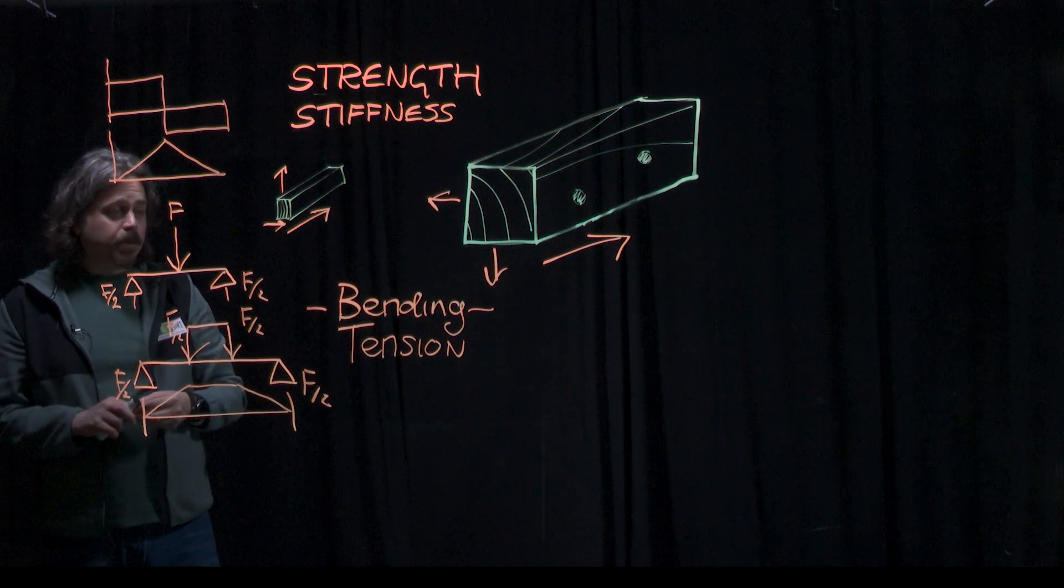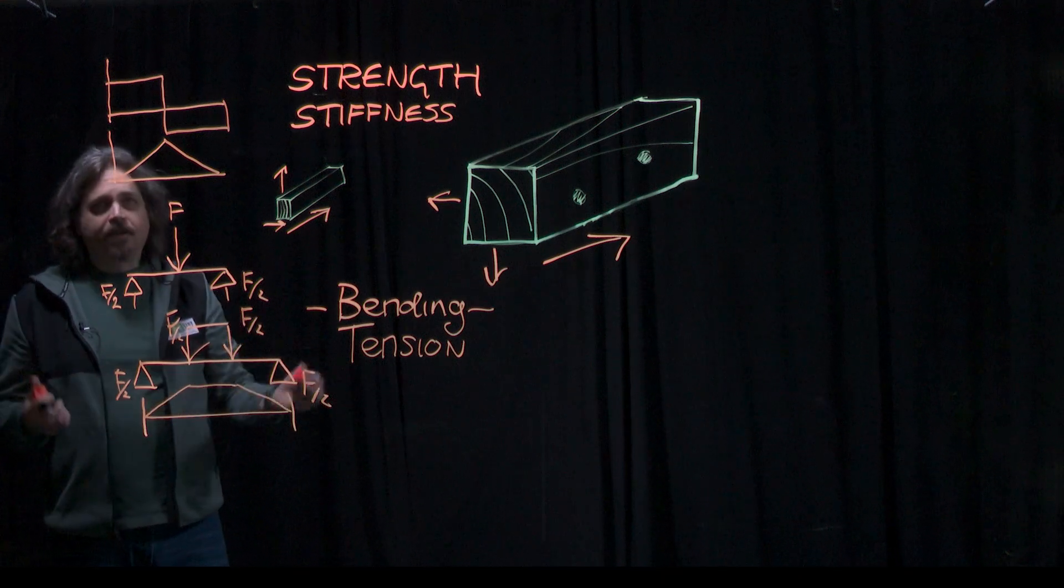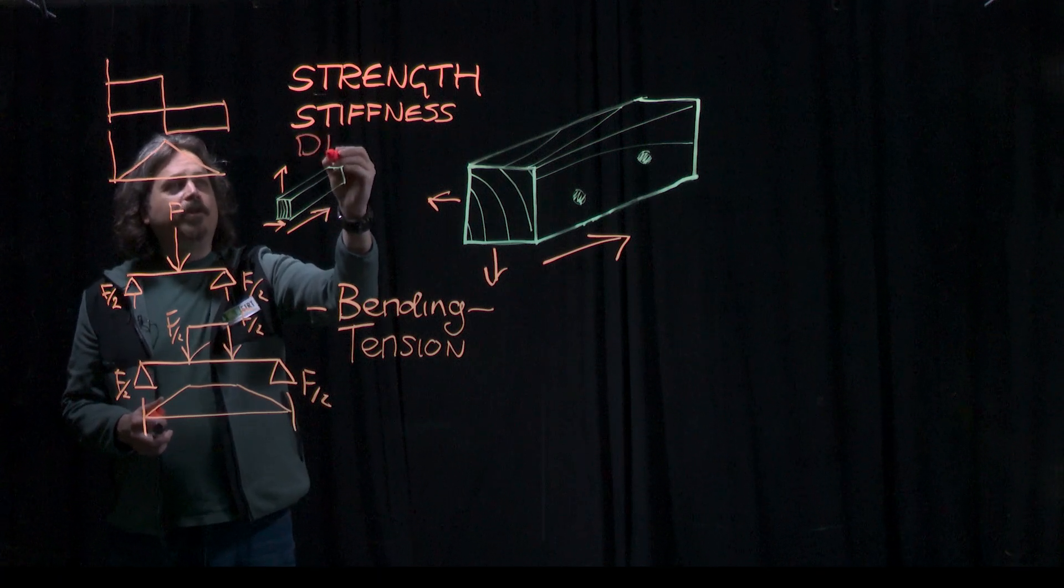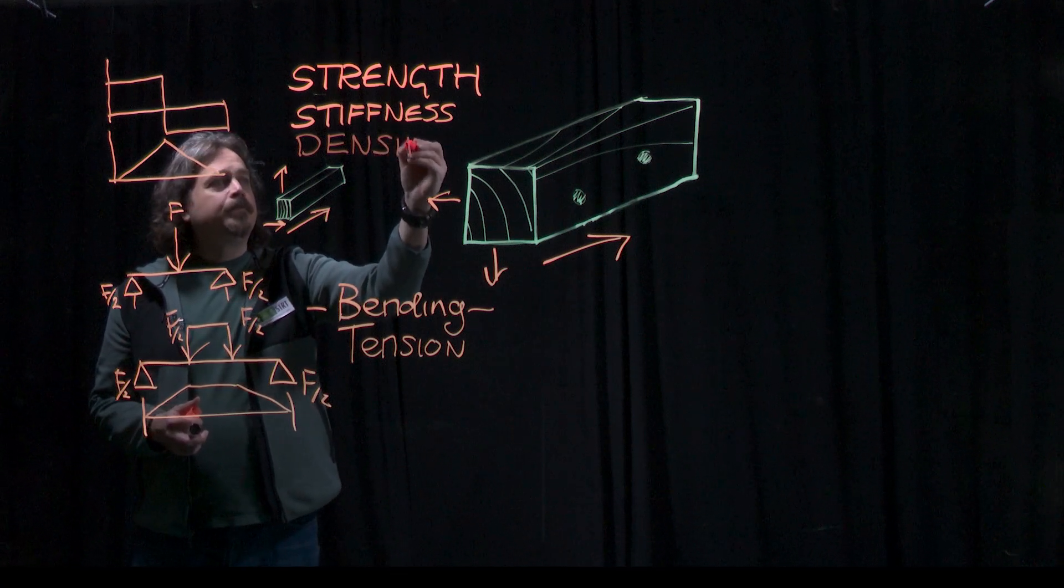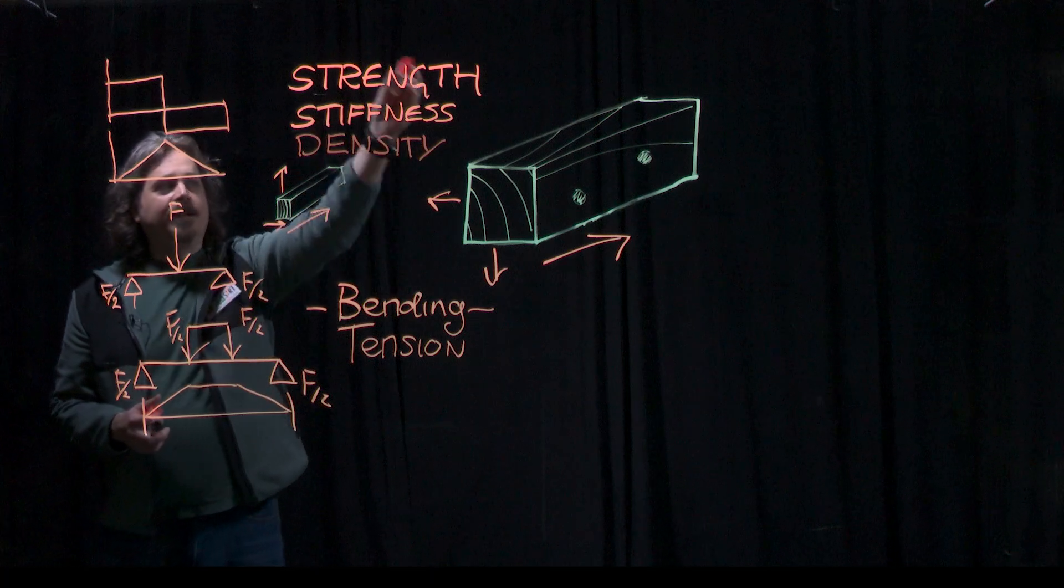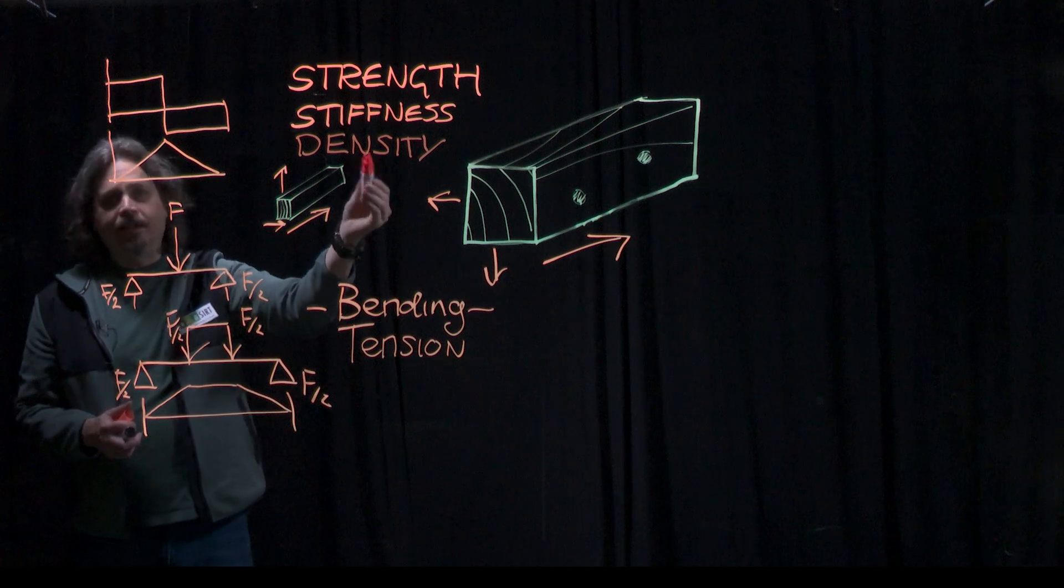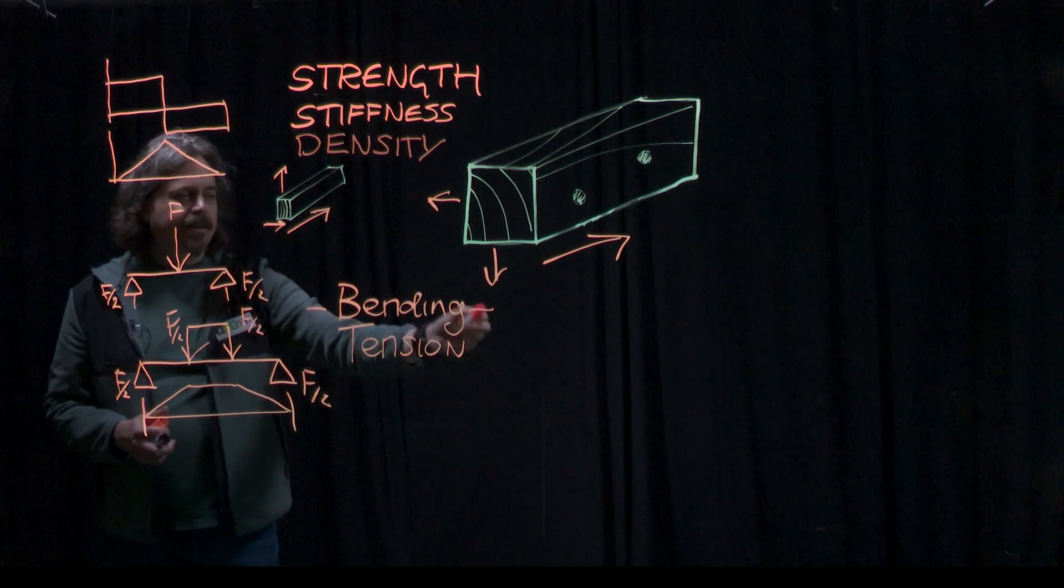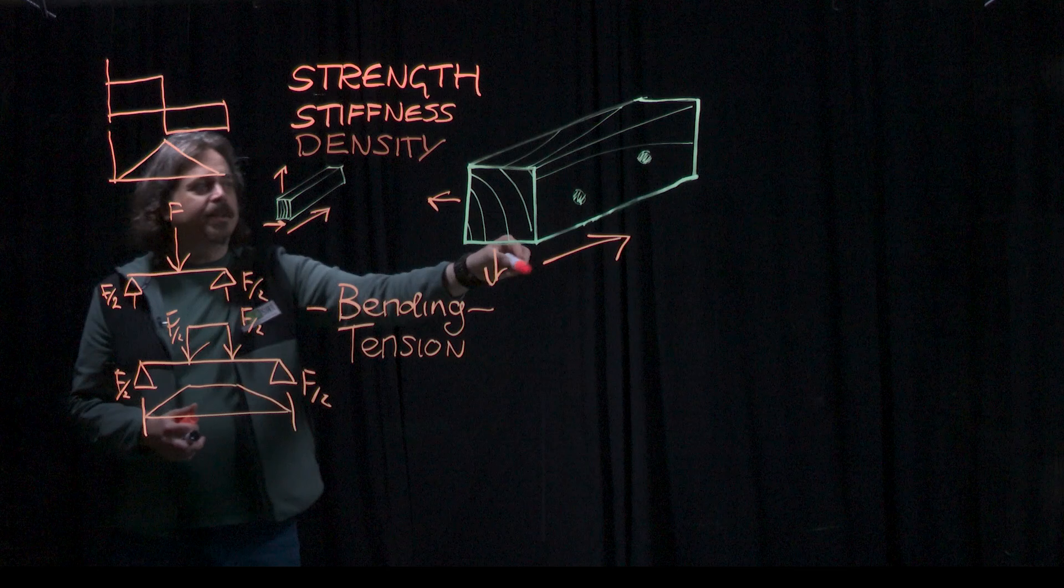There are many other properties that you would need to design timber buildings. But because it's expensive to test every single property, we assume a lot of them from the physical property of density. Density is often listed as a mechanical property alongside strength and stiffness because density is useful for predicting some kinds of strength. But it's not very good at predicting bending strength and tension strength of individual pieces of timber, especially when they're full size.